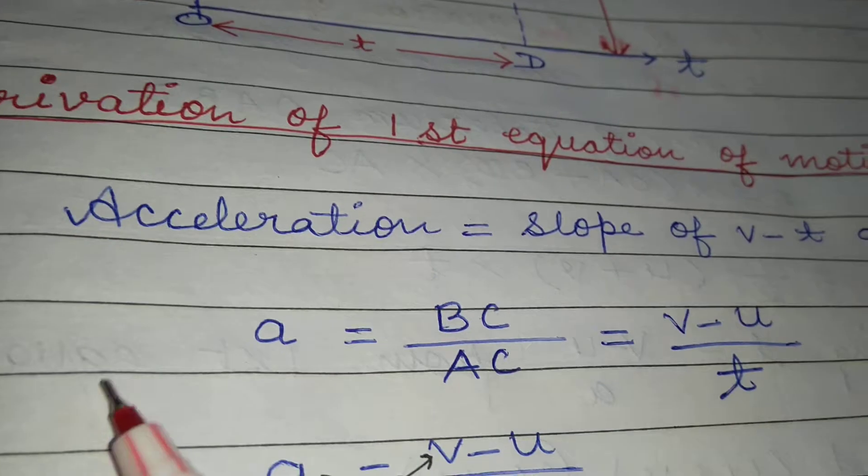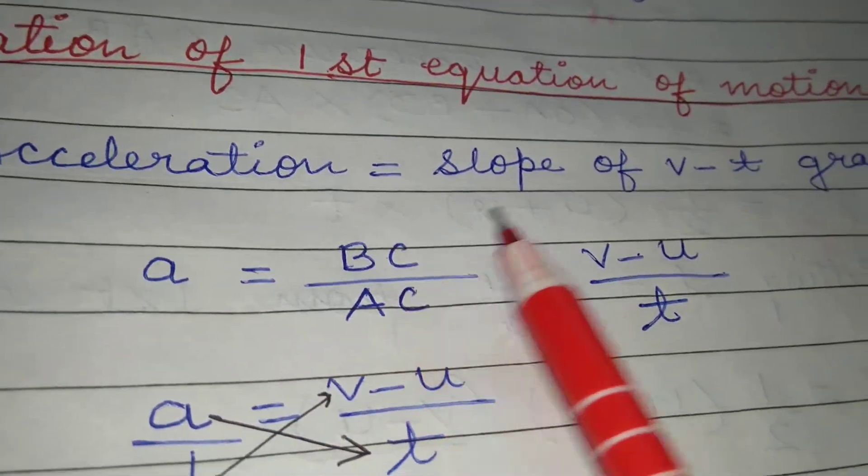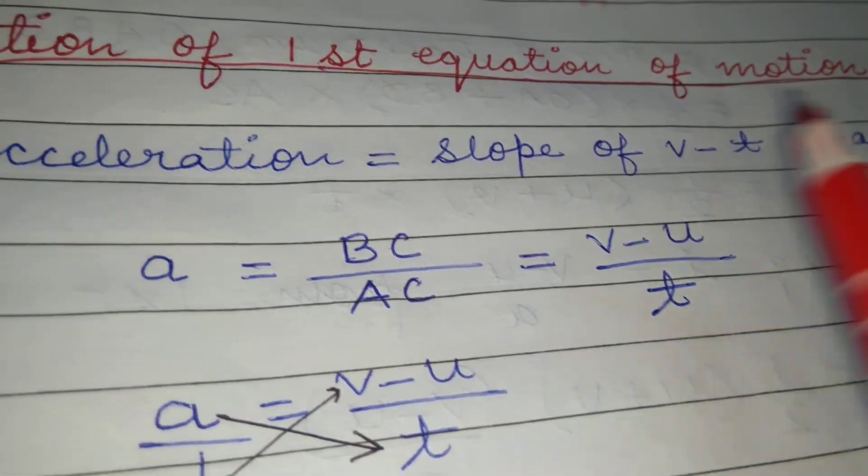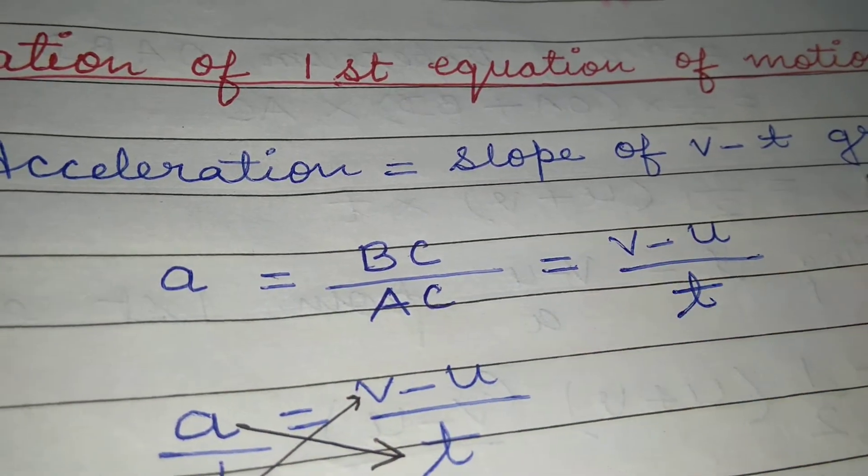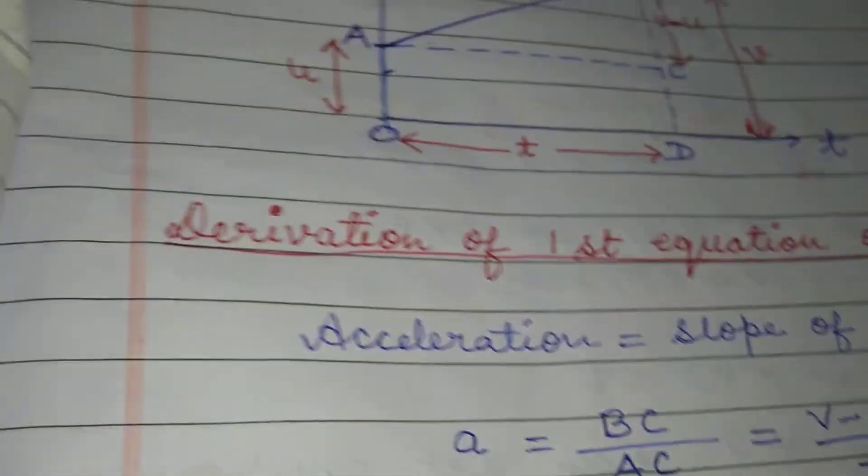First equation of motion, we will start from this point that acceleration is equal to slope of vt graph. So here a is equal to, if we have to find the slope of this graph, then what will we do?